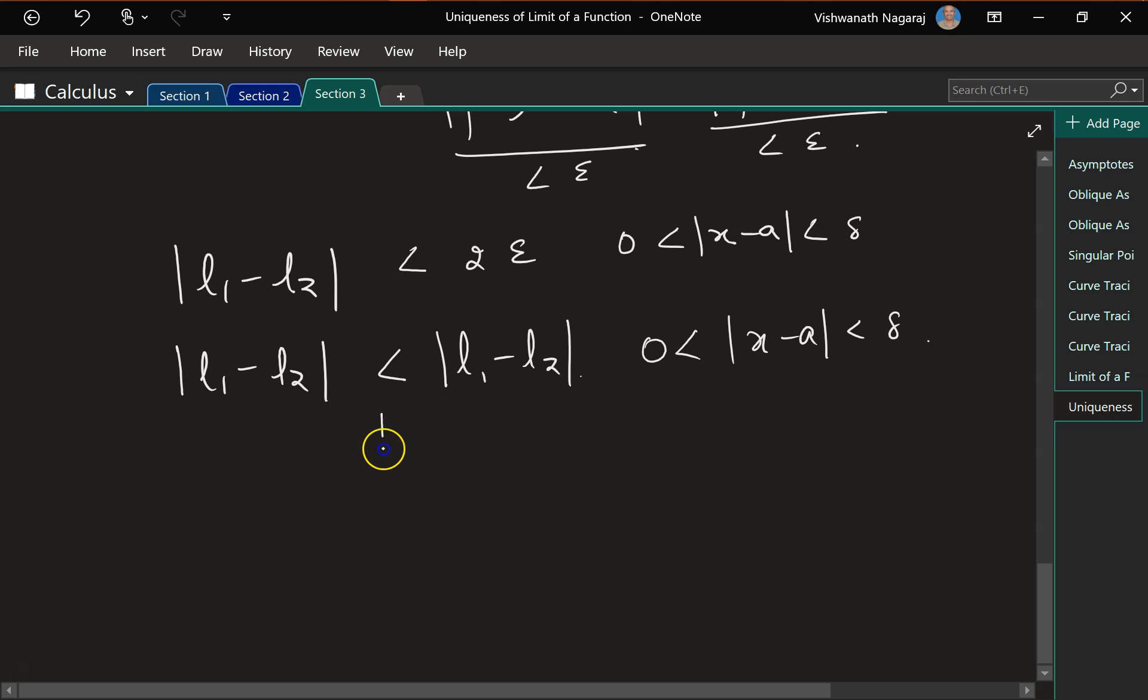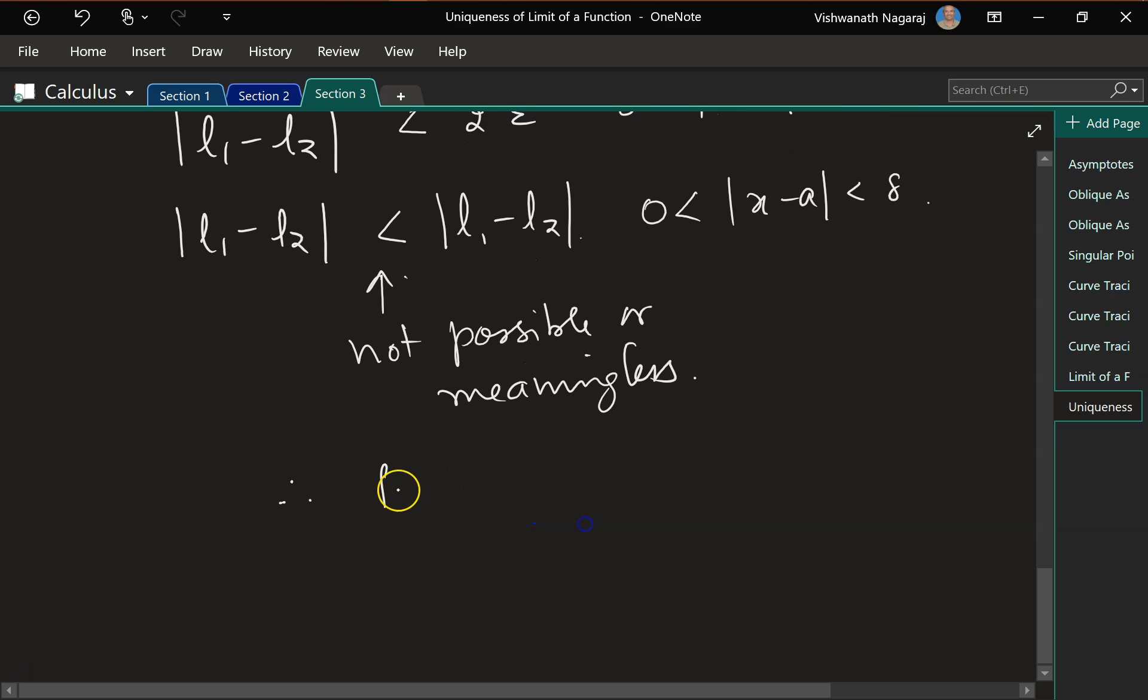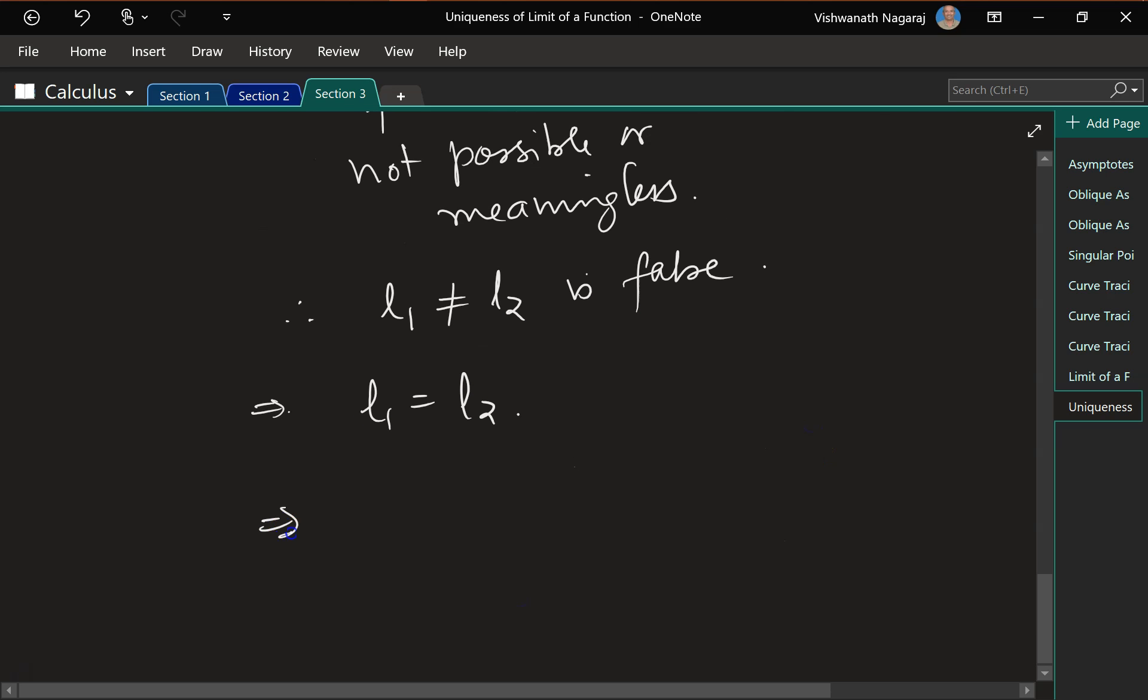So which means this is not possible or it's basically meaningless. Therefore, l1 is not equal to l2 is false, which implies l1 is equal to l2, which implies that the limit is unique.